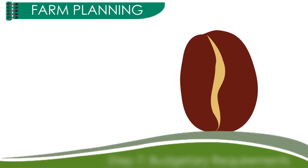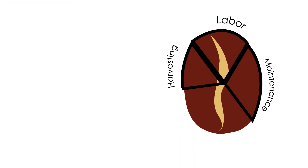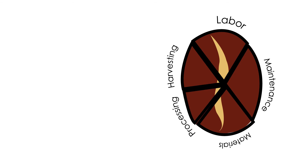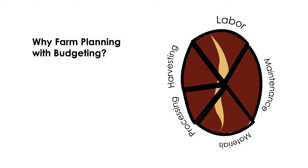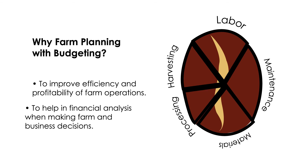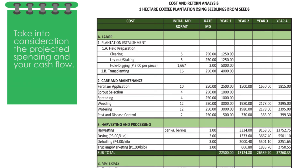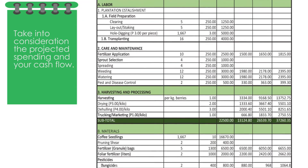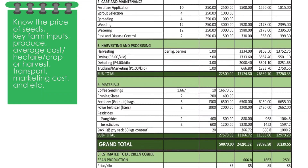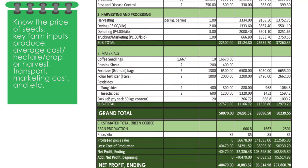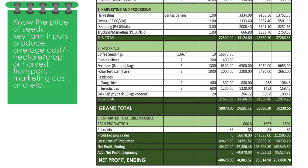Step 7: Budgetary requirements. Budgeting is the process of allocating resources to specific activities within a certain period. Farm budgeting is important to improve efficiency and profitability of farm operations, and to help in financial analysis when making farm and business decisions. Take into consideration the projected spending and your cash flow. Know the price of seeds, key farm inputs, produce, average costs, transport, marketing costs, and other necessary information to calculate the cash flow.